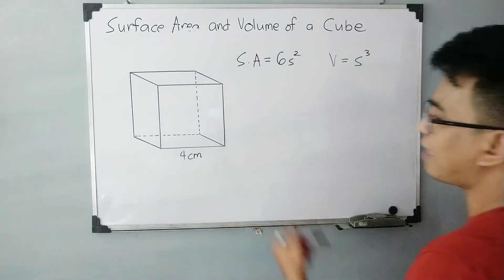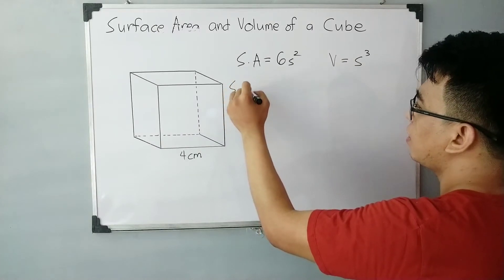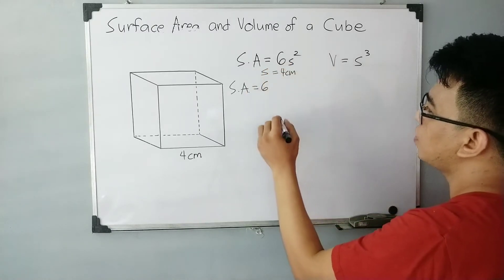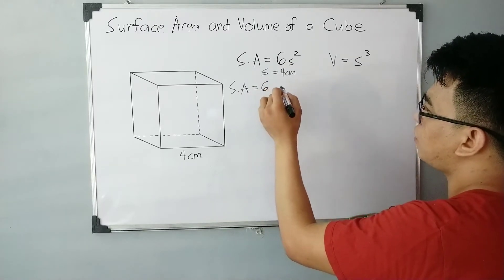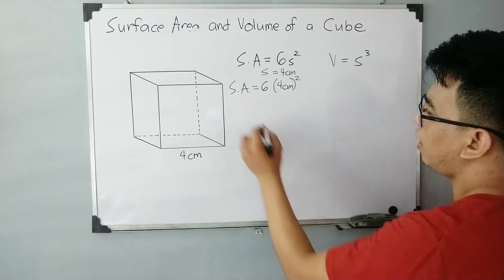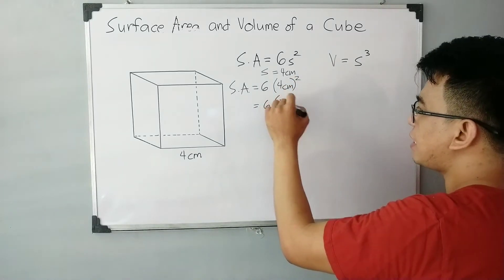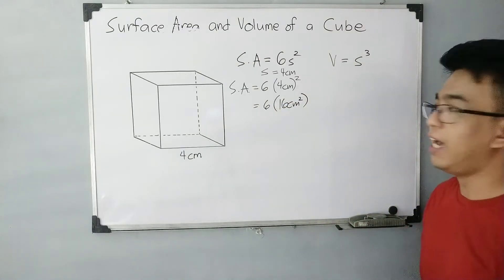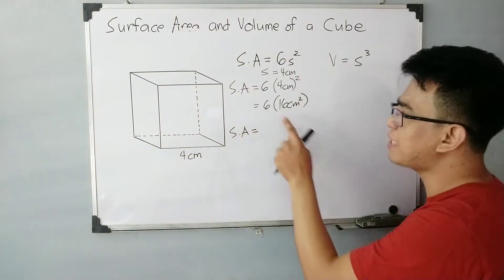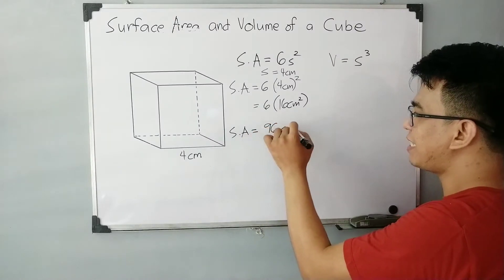So now, to make it easier to understand, let's try calculating for the surface area of this given cube, where the dimension or the length of its sides or edges is 4 centimeters. Starting with the surface area: SA is equal to 6 times S squared, and S is equal to 4 centimeters. Substituting: 6 times (4 centimeters) squared. Simplifying: 4 centimeters squared gives you 16 centimeters squared. Then 6 times 16: 6 times 10 is 60, plus 6 times 6 is 36, giving a total surface area of 96 centimeters squared.